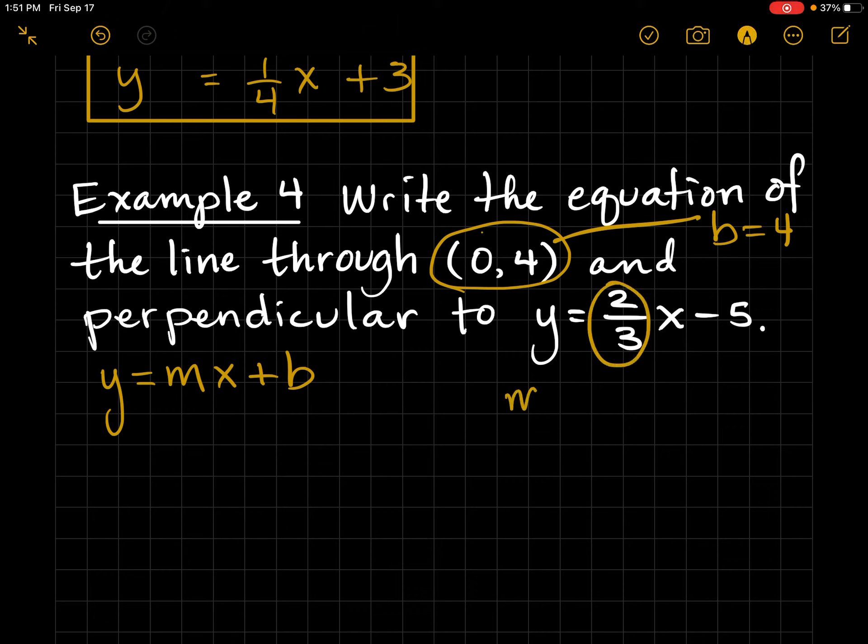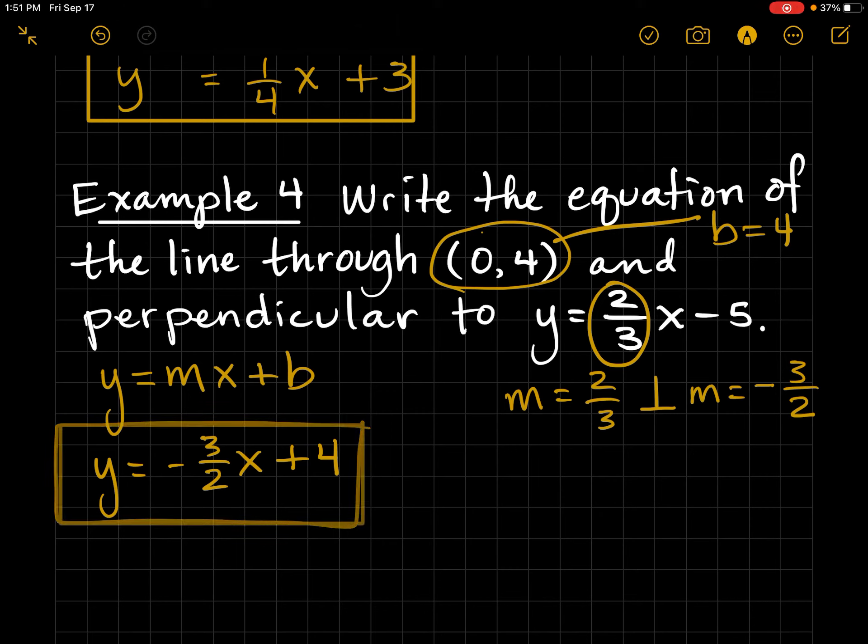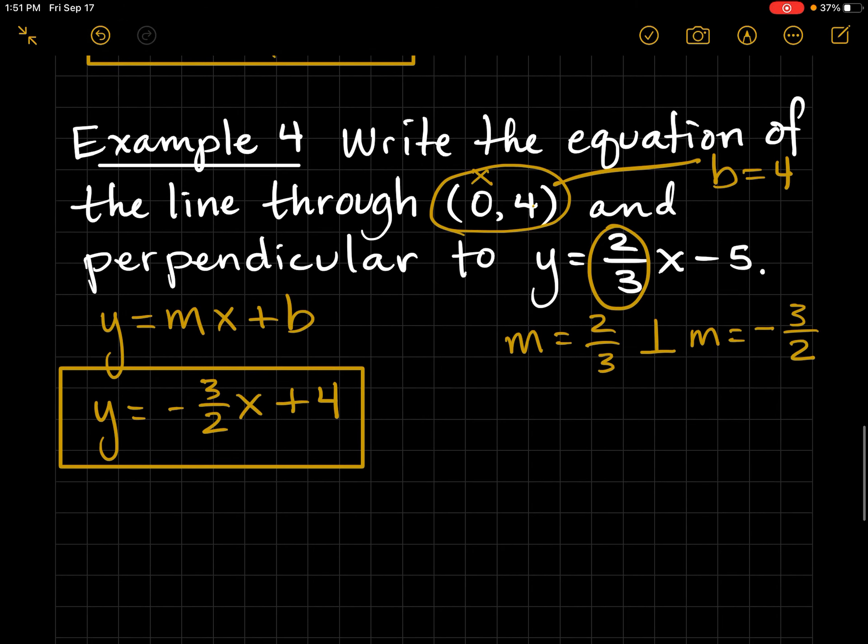Perpendicular. So my slope here is 2 thirds. So perpendicular slope would be negative 3 halves. So now I can just say negative 3 over 2, X plus 4. Final answer. Remember, if X is 0, this is automatically a Y-intercept.